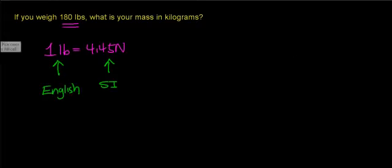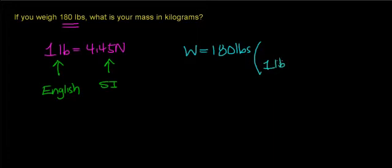Now your weight is equal to 180 pounds. The first thing you need to do is convert from pounds to units of newtons. To do that, you know that 1 pound equals 4.45 newtons.